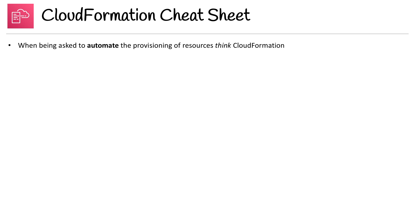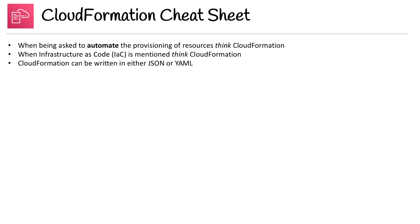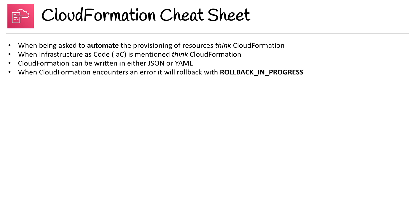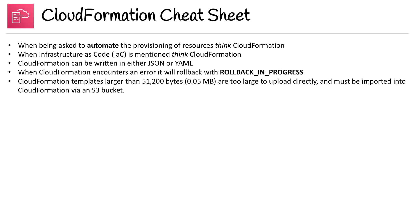When being asked to automate the provision of resources, think CloudFormation. When infrastructure as code is mentioned, think CloudFormation. CloudFormation can be written in either JSON or YAML. When CloudFormation encounters an error, it will roll back with 'rollback in progress.'